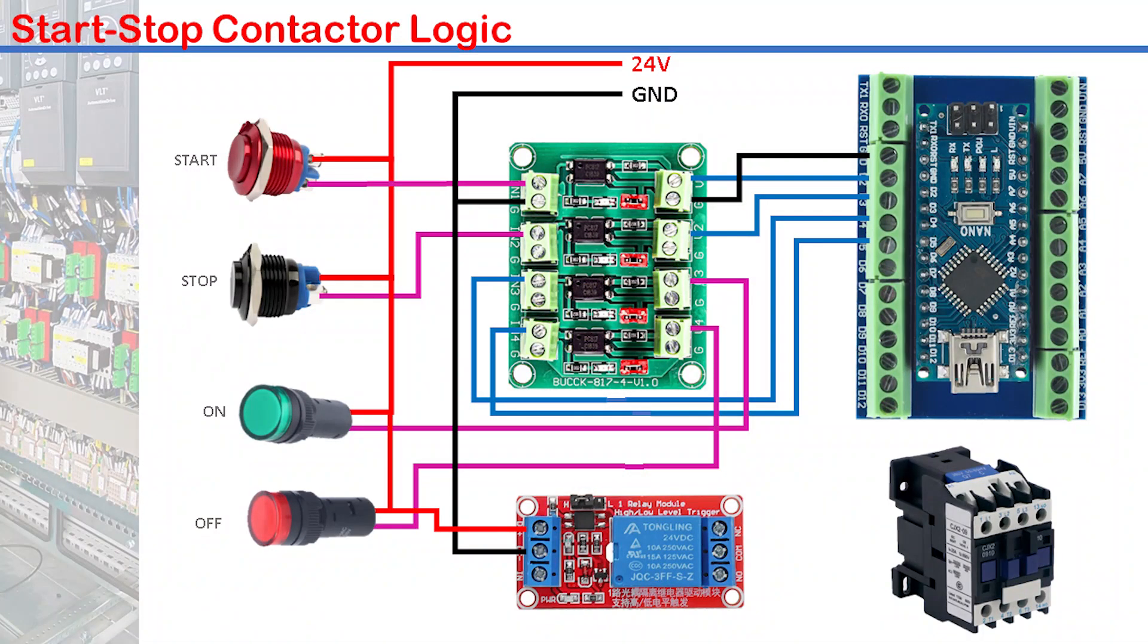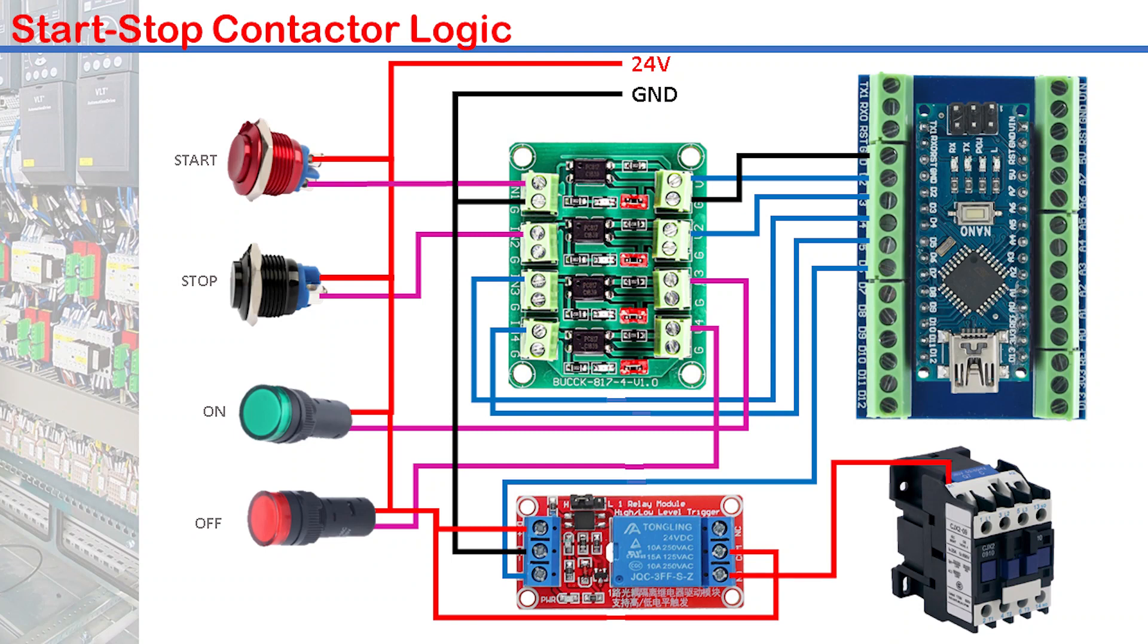IN1 is connected to pin D6 of the Nano. The output of the relay can either be normally open or closed as may be required. 24V positive is connected to the common terminal. NO is then connected to terminal A1 of the contactor. Terminal A2 is finally connected to 24V negative.